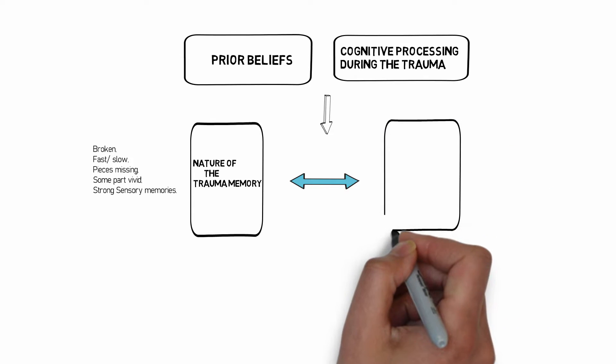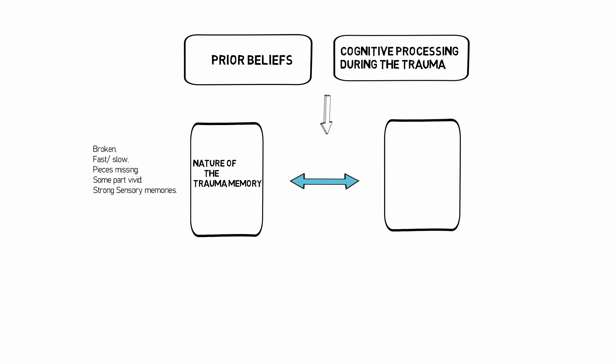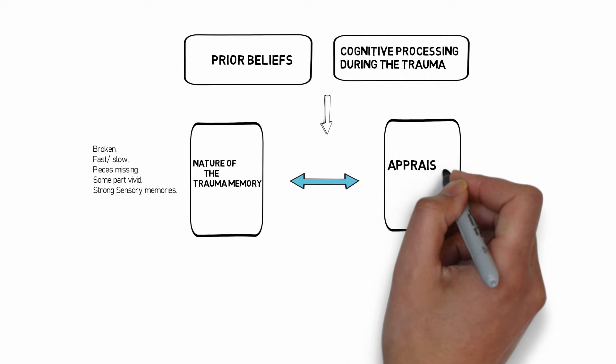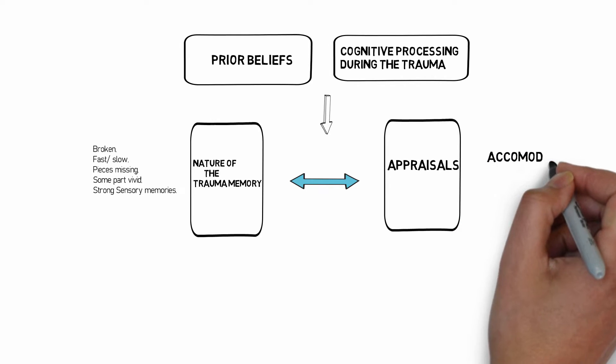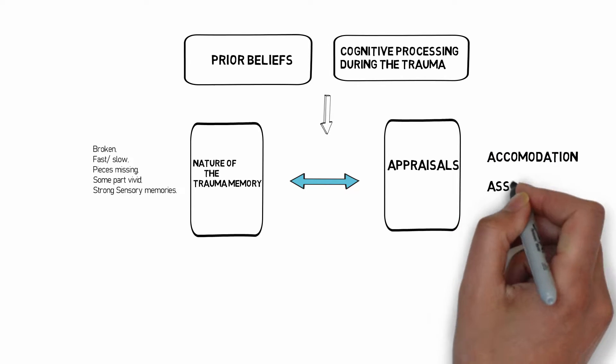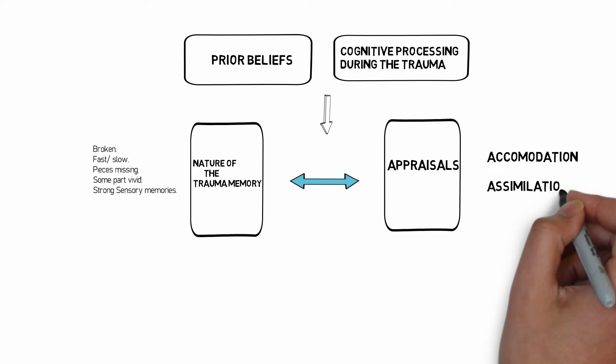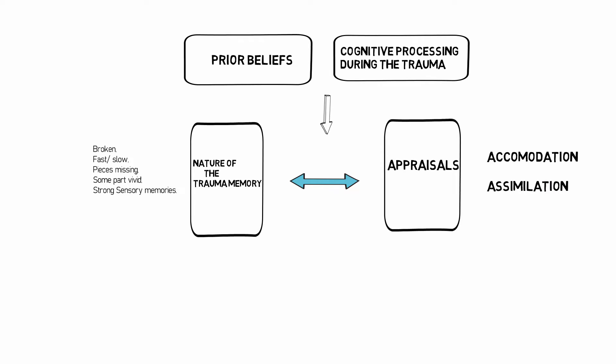Another important part of the model is appraisals. Ehlers and Clark suggest there are two processes that beliefs go through when trying to appraise new information that is traumatic, and this is accommodation and assimilation. I'm going to be going through this in another follow-up video and going into a lot more detail, but for today I just want to explain one example and see how this fits in with the model.